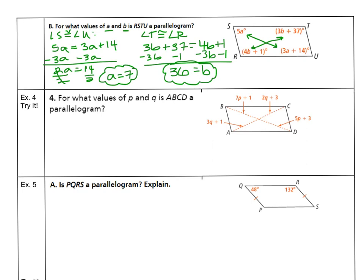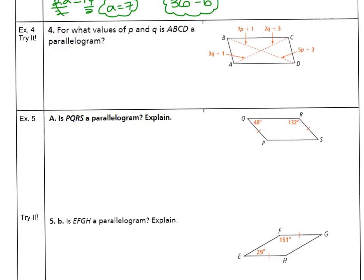So that's the work for angles. And in example 4, we're going to take a look at diagonals. Again, applying a little bit more algebra here, for what values of P and Q make ABCD a parallelogram? Well, if we look at segment AC from the bottom left to the top right, we know by definition that that diagonal is bisected. That would help us determine the value of Q.